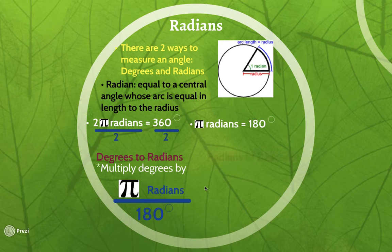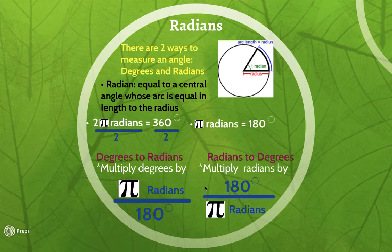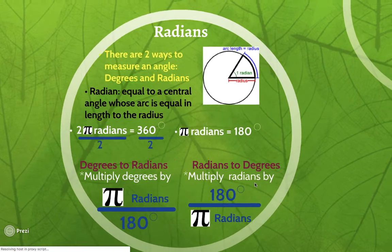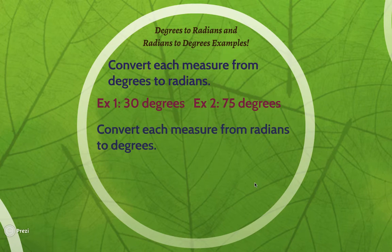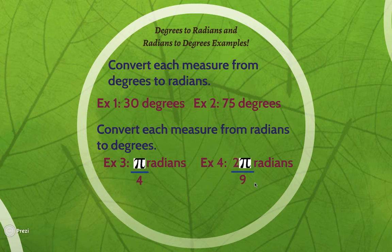If we're going the other way — given radians and wanting to find degrees — we reverse this. We multiply the radians by 180 degrees over pi radians, because the radians cancel out since they're in the denominator, and we're left with degrees in the numerator. We'll use these conversions to convert from degrees to radians and radians to degrees. Go ahead and pause the video and watch examples 1, 2, 3, and 4.